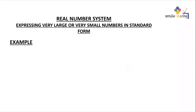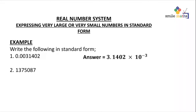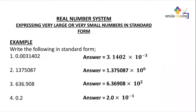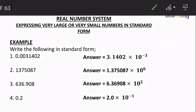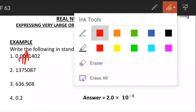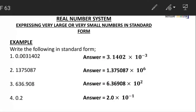Our first example is 0.00314002, and we need to write this in standard form. We move the decimal point — moving one, two, three places — so the decimal lands between three and one, which are our first two significant figures. The answer becomes 3.14002 × 10^(-3), because we moved three times and moving from left to right gives a negative power.